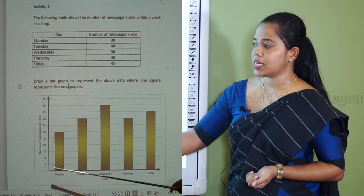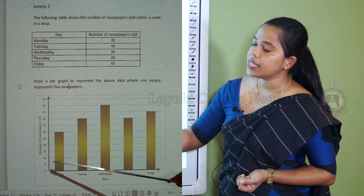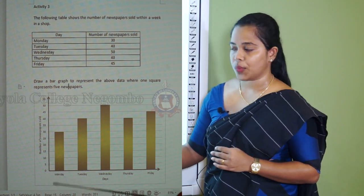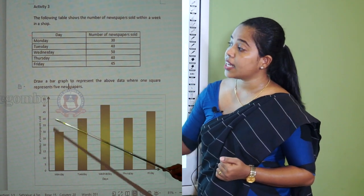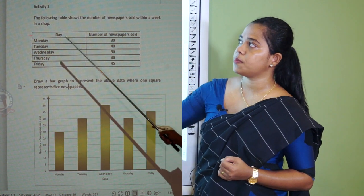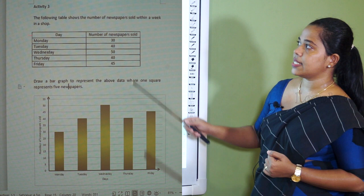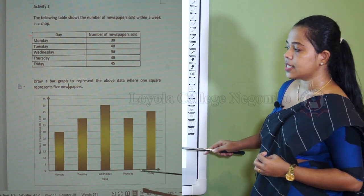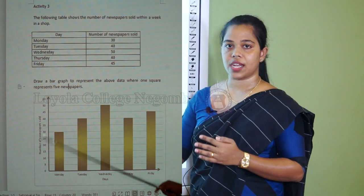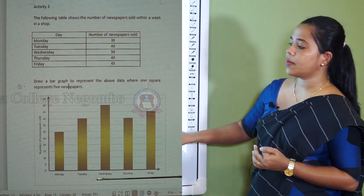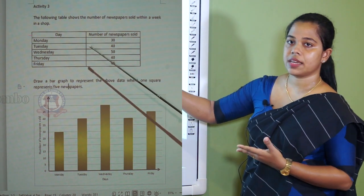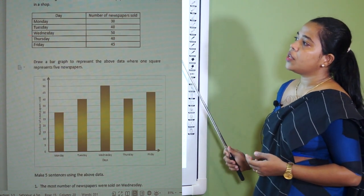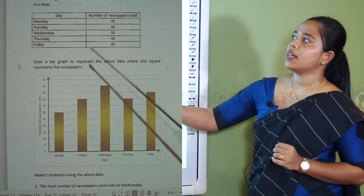Draw the two axes — the vertical axis and the horizontal axis. Number the vertical axis five by five, always starting from zero. Name the vertical axis as number of newspapers sold and the horizontal axis as the days. Show all the days: Monday, Tuesday, Wednesday, Thursday, and Friday. Normally in the vertical axis we show the numbering, and in the horizontal axis we show the names or days given. You must decide on the scale based on the given data.